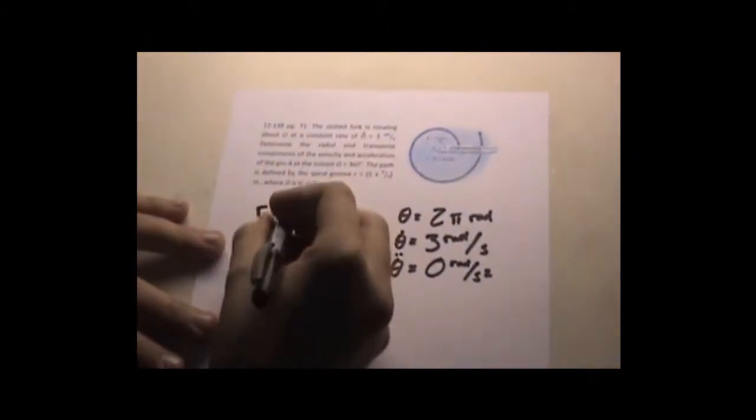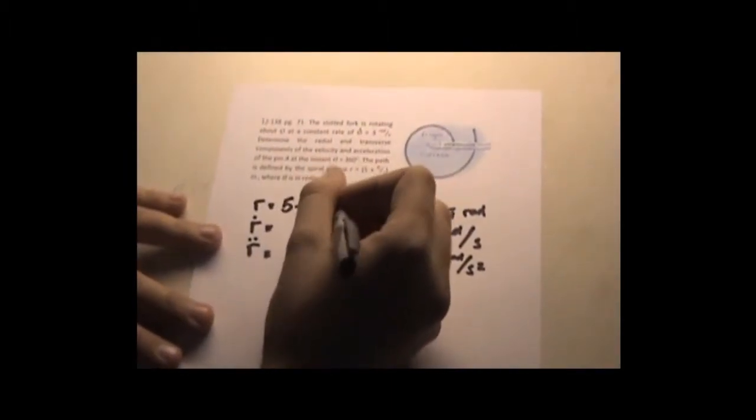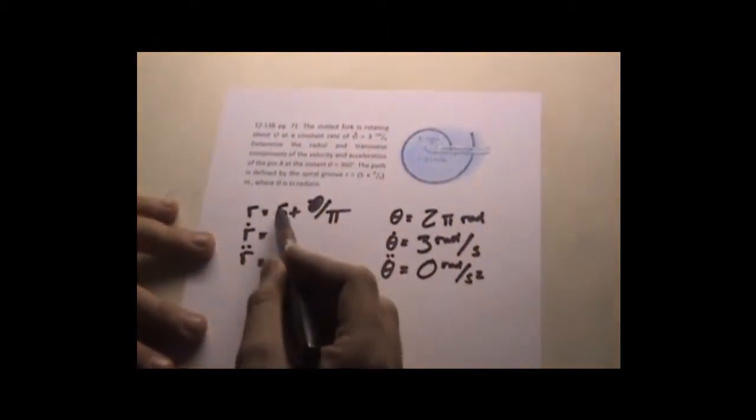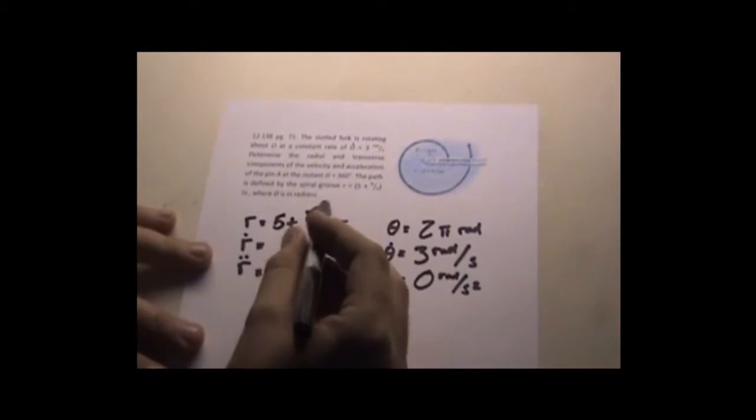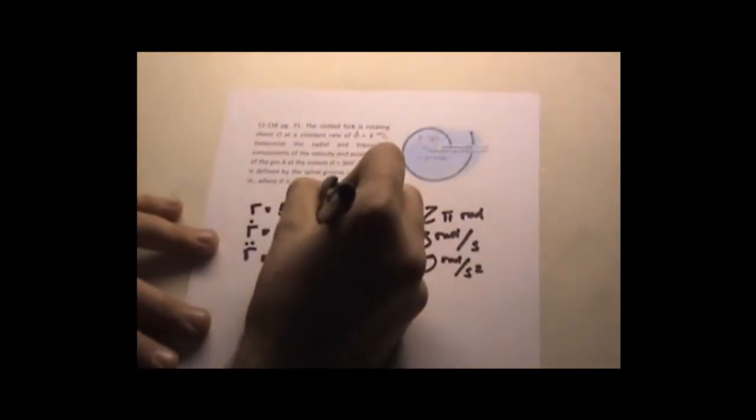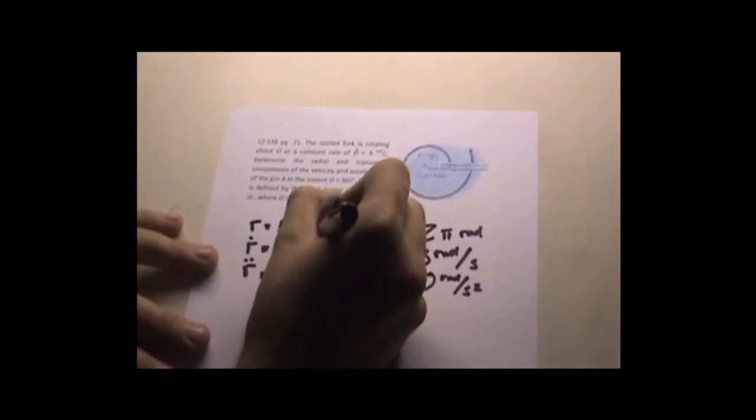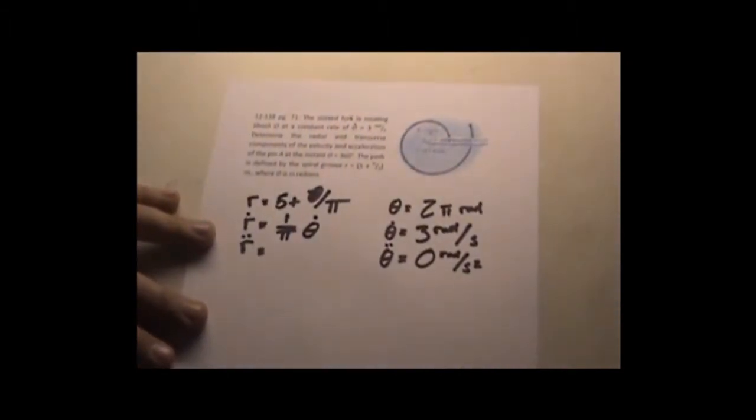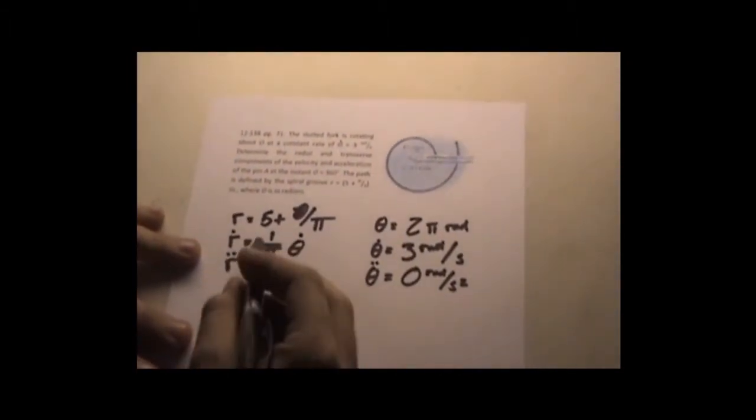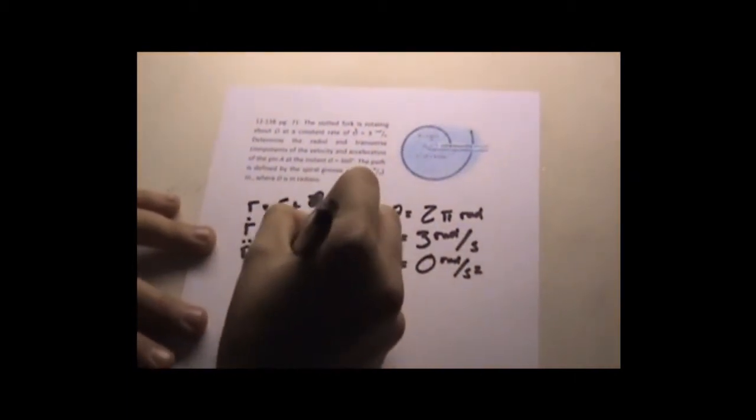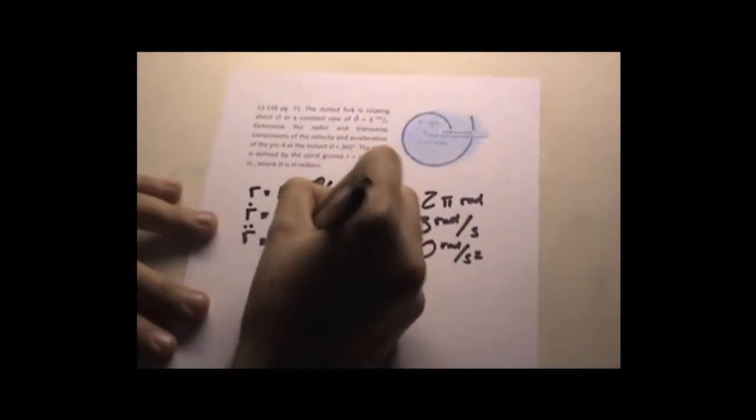You also get ṙ, ṙ, derivative of 5 plus θ over π. 5 goes away. Derivative of θ over π is 1 over π, θ̇. Do the same thing again. We get 1 over π, θ double dot.